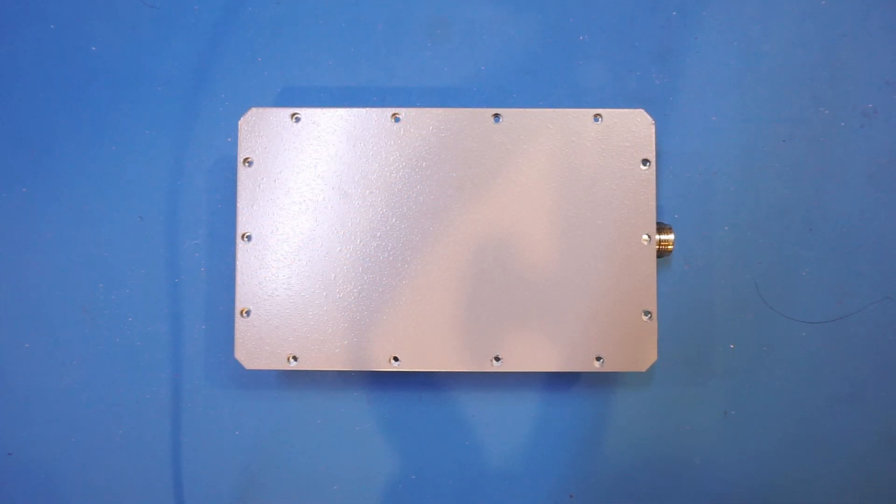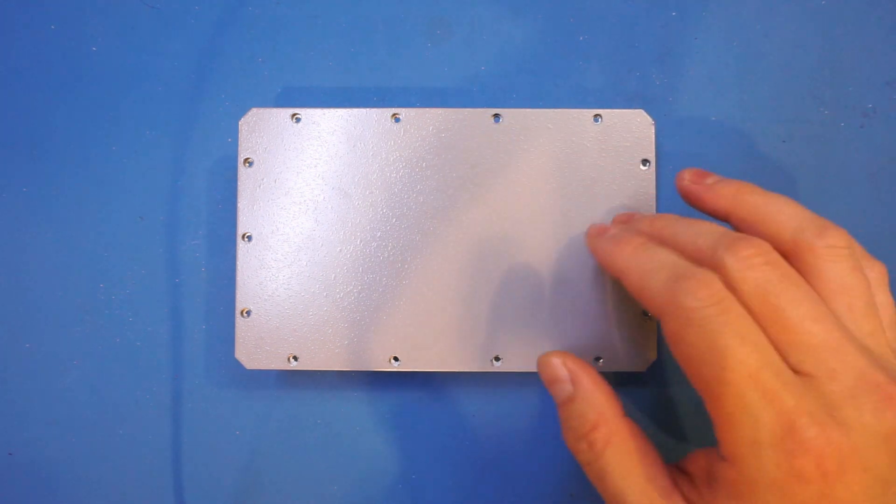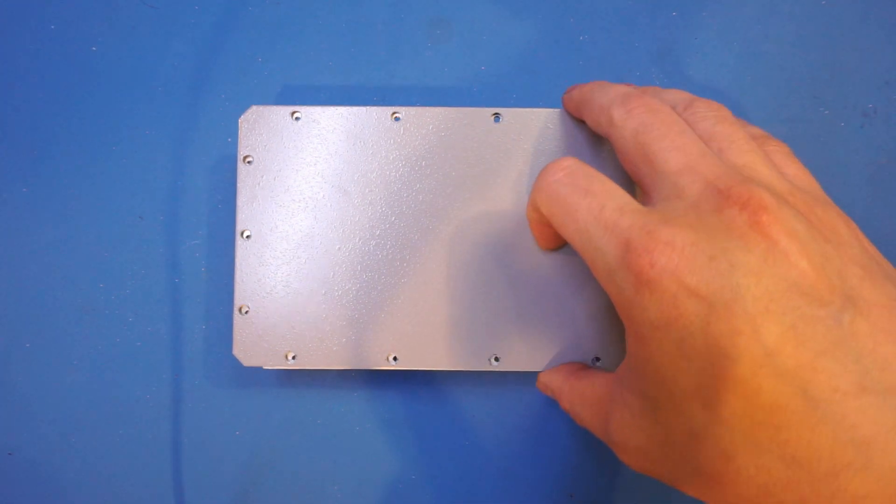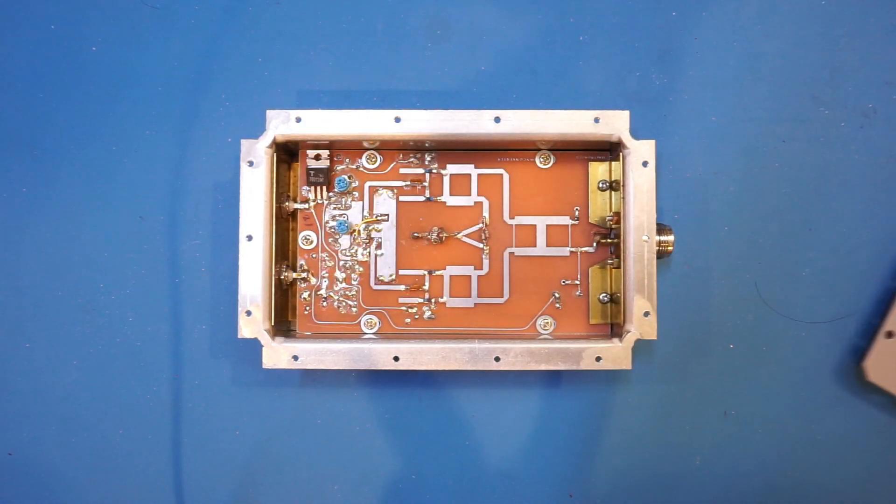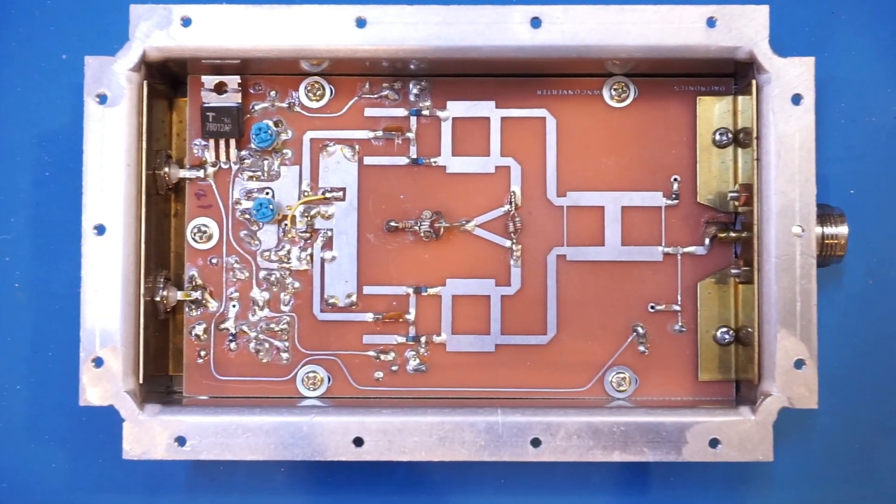Now I have removed all the screws. There are actually quite a few of them. We should be able to remove this bottom cover now. Aha! Check this out. It certainly looks very interesting. Let me zoom in a bit so we can see a little bit more detail and we'll go through what each component means in this downconverter.